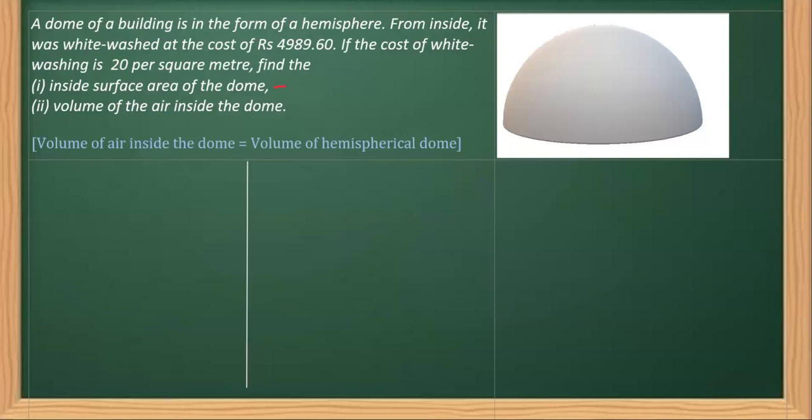In short, we have to do two things. In the first part, we are going to find the curved surface area, and in the next case we are going to find its volume. Let's start with the first part. We know that the total cost involved is equal to area, which is curved surface area in this case, multiplied by the rate. The total cost as given here is 4989.60.